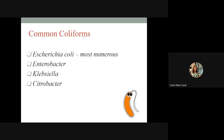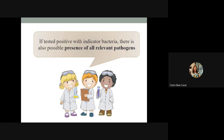The most common coliforms are Escherichia coli — the most numerous coliform — Enterobacter species, Klebsiella, and Citrobacter species. If tested positive for coliform bacteria, there is also a possible presence of all relevant pathogens. If positive for coliform bacteria, it is likely positive for other relevant pathogens as well, though there is still a chance no additional pathogens are present. However, per WHO, any organism presence makes the water not safe for consumption.